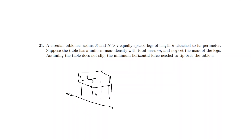Now let's consider the forces on this table. First we have gravity with magnitude mg. Then we're going to have a horizontal force. We don't want to apply it near the legs — we want a large torque, so we apply it high up. That force we'll just call F for now, because we're trying to find that. So we just need to balance torque here.